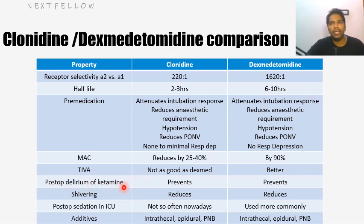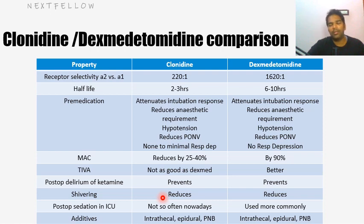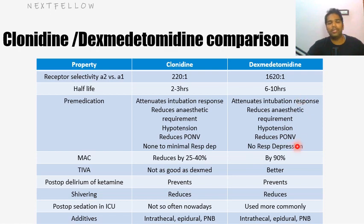Ketamine normally produces a minimal amount of post-operative delirium in a certain group of patients. Both clonidine and dexmedetomidine can be used to prevent that effect. For shivering, we can use ketamine, tramadol, or other opiates — and both clonidine and dexmedetomidine reduce shivering. For post-operative sedation in ICU, dexmedetomidine is very commonly used, especially in the pediatric population. Patients on ventilators who are very agitated can receive a dexmedetomidine infusion to prevent agitation and provide sedation and analgesia.